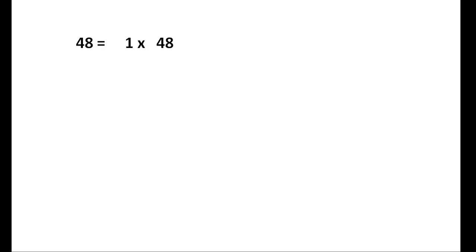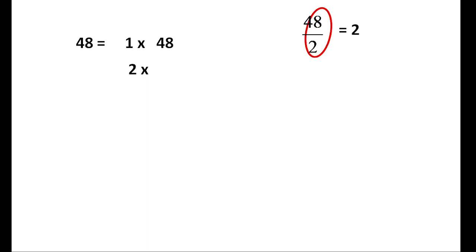Now for the number 48: 1 into 48. Since 48 is an even number, we check 2. We know 2 into 24 is 48, so 2 and 24 are factors. Checking further: 4 by 2 is 2, 8 by 2 is 4, and 24 into 2 is 48.